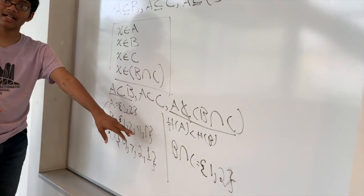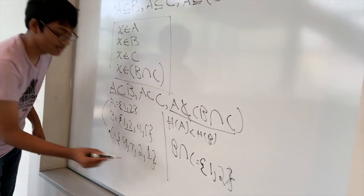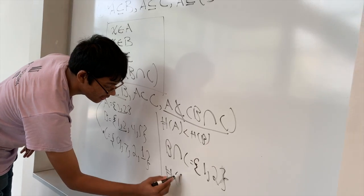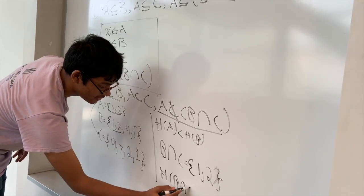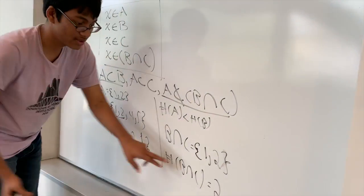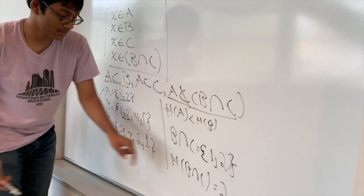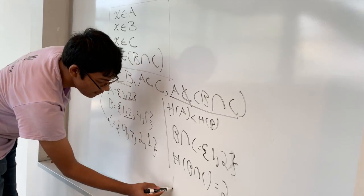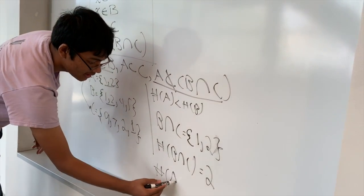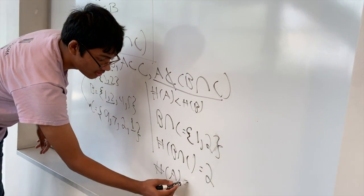So what is the cardinality of this? Well, let's take a look. The cardinality of the intersection of the sets is going to be 2, because there are only 2 elements. And the cardinality of set A is also 2.